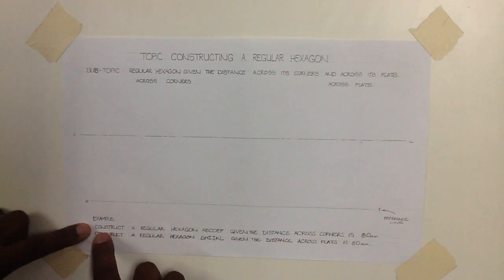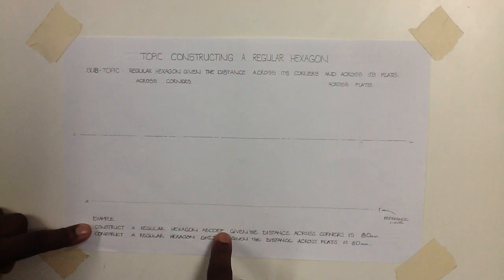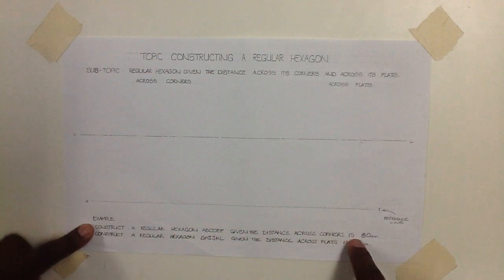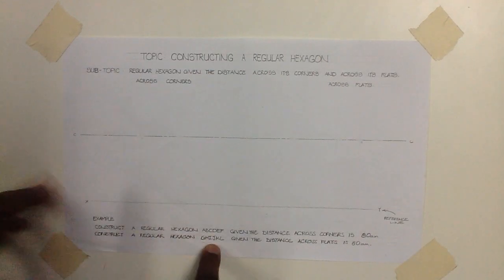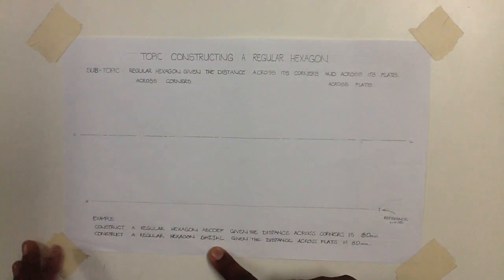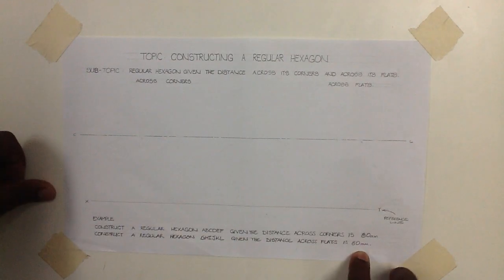The example tells us to construct a regular hexagon A, B, C, D, E, F, given the distance across its corners is 80 mm, and construct a regular hexagon G, H, I, J, K, L, given the distance across its flats is 80 mm.